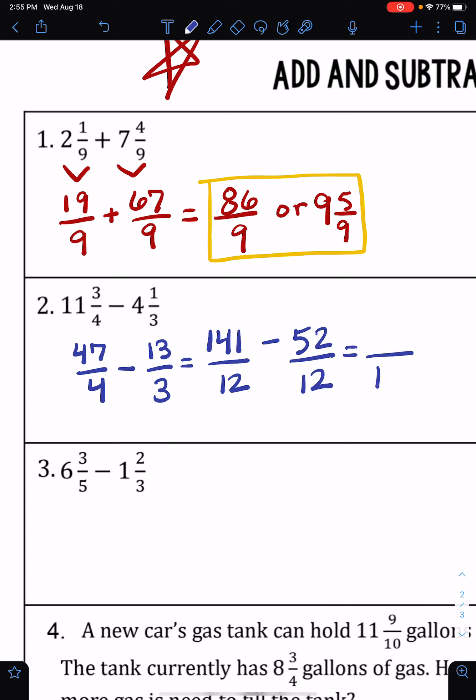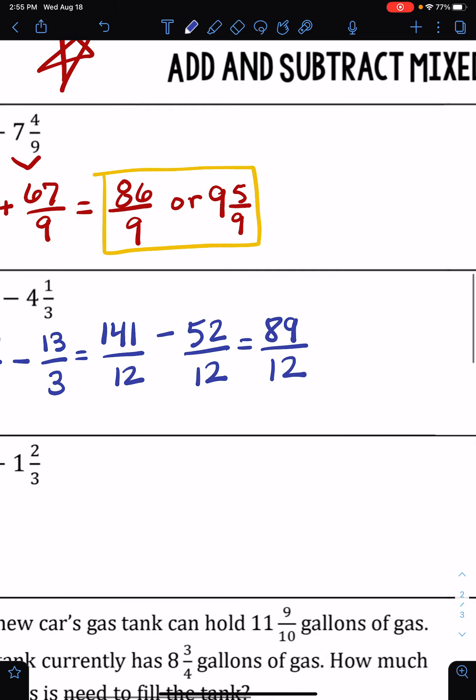So I'm going to subtract 141 minus 52 to get 89 over 12, and I believe that is simplest form. However, if you want to change it into a mixed number, 12 times 7 is 84, so that would give us 5 left over. Either one of those would be acceptable. I prefer the improper fraction on the left, but the mixed number is also correct and I would not mark that wrong.